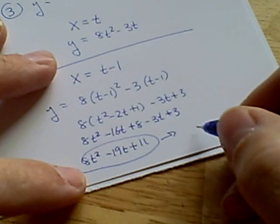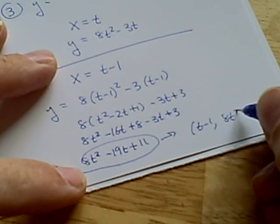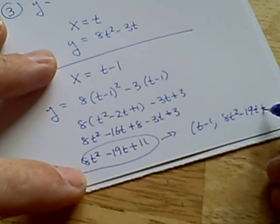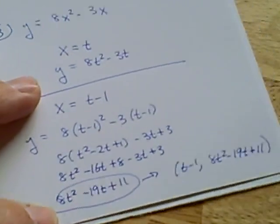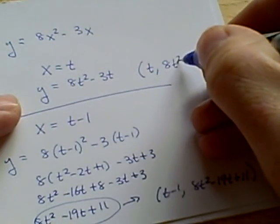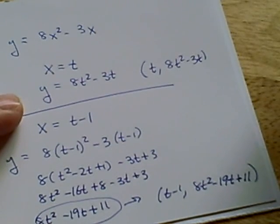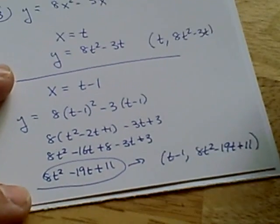Well rather, anyway, (t - 1, 8t² - 19t + 11). Just like the above parameterization would be (t, 8t² - 3t). So there are a number of possible ways to parameterize this equation.